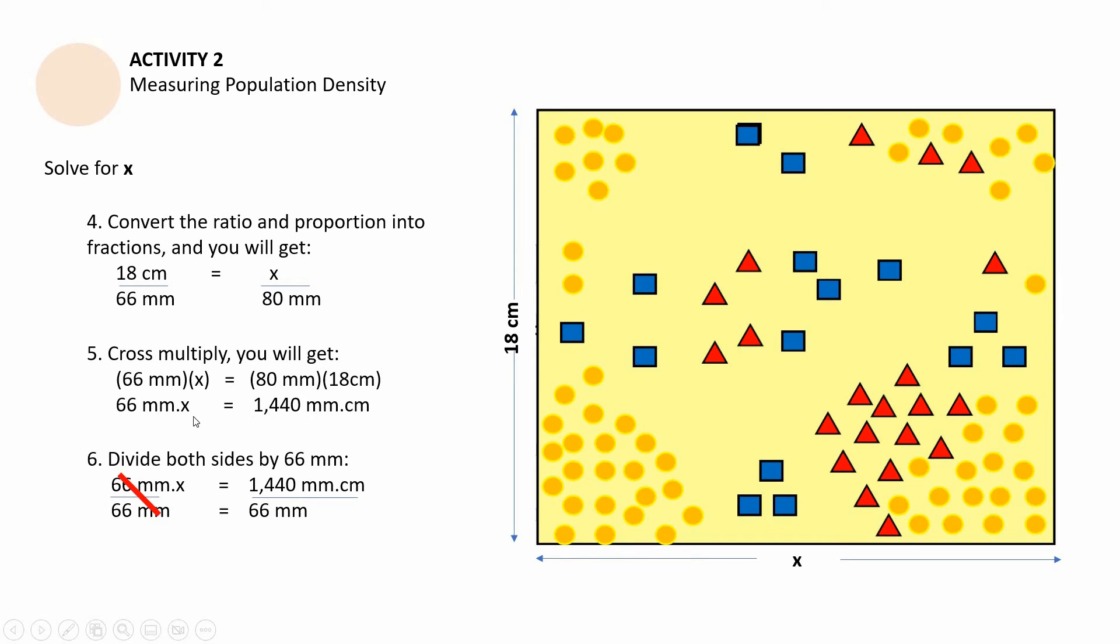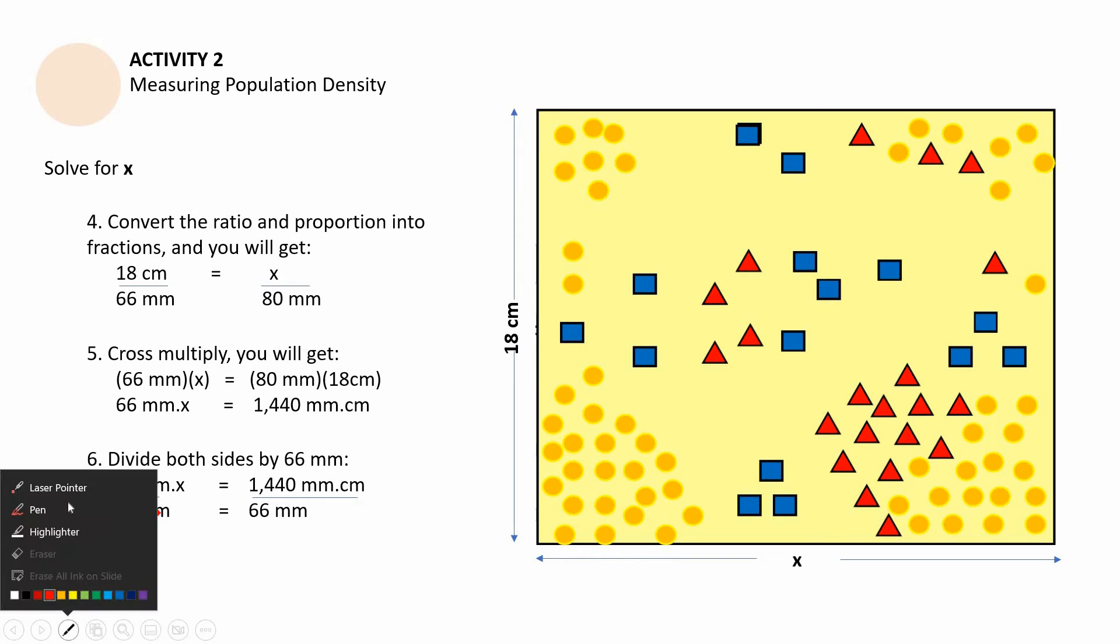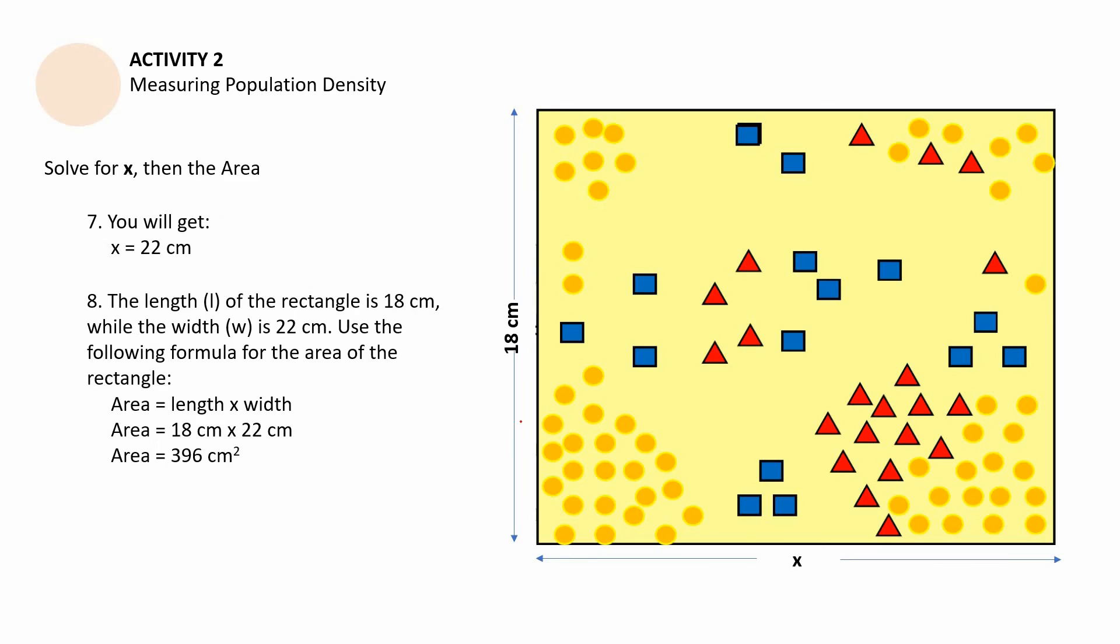The next part of our process is going to be dividing both sides by 66. So when you divide both sides by 66, you can cancel out the millimeters here. So 66 millimeters divided by 66 millimeters is going to be cancelled, leaving just x. And then, when you divide 1,440 millimeters centimeters by 66 millimeters, the millimeters will be removed, leaving the centimeters. And that's how we corrected what we did. And then the result is going to be 22 centimeters. So that means this width here, x is equal to 22 centimeters.